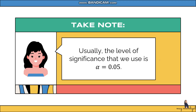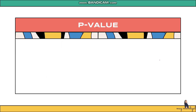Usually the level of significance we use is 0.05, or alpha equals 0.05. You can use other levels of significance, but this is the most commonly used. If you recall hypothesis testing for z-test and t-test, we used a test statistic and critical value. We also have a test statistic in correlation, but for now we will be applying the p-value method.